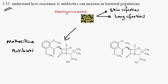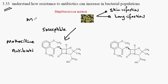The type of Staphylococcus aureus which is killed by Methicillin is called the susceptible form. We can abbreviate all of that to Methicillin-susceptible Staphylococcus aureus.